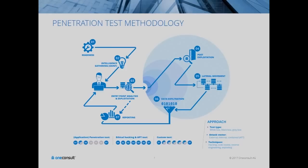This shows a general overview of how an attacker works or how we assess a system. At number one you see readiness for IoT devices — setting up cross-compilers to compile code for those devices, getting to know the OS, usually Linux. Then intelligence gathering: what you can find about a company online without touching the target itself — Googling LinkedIn, looking at job descriptions. If they're looking for a MySQL specialist, we know they use MySQL in the background.